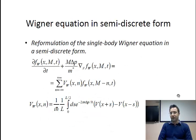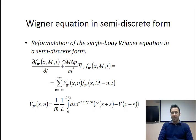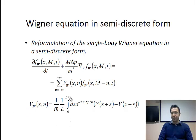To proceed further, once we define a semi-discrete phase space, it is possible to redefine the Wigner equation in a semi-discrete form. Without going through the technicalities, the semi-discrete form is the equation you see here on this slide. You may notice that the drift term is now defined in terms of a multiple of delta P, and the integral is now a sum over the momentum. Also notice that the Wigner kernel is redefined in terms of a finite domain introduced by the free parameter L defined earlier.